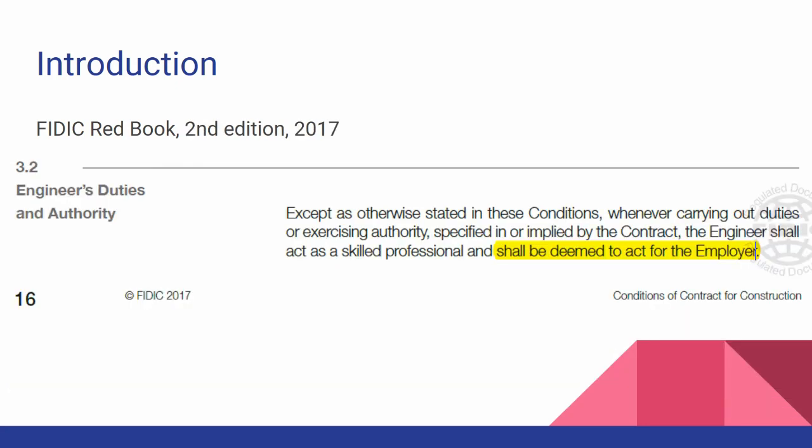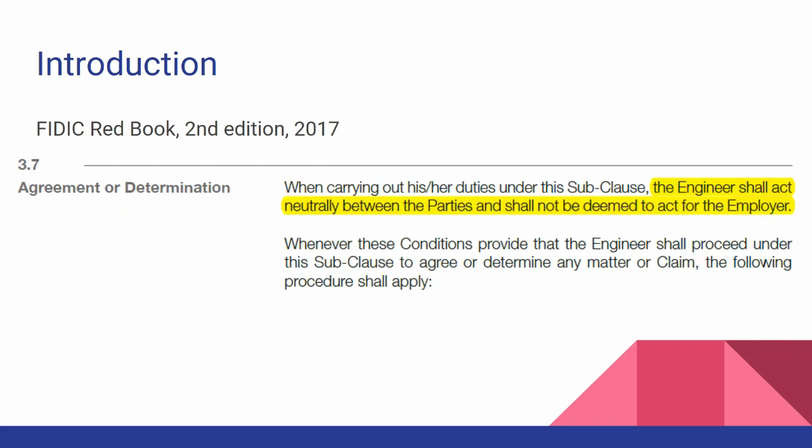In 2017, this problem was partially resolved. Clause 3.2 states the engineer is still deemed to act on behalf of the employer, however there is an exception: the engineer is not acting on behalf of the employer when rendering a determination. A new word was introduced in the 2017 edition — the engineer will be 'neutral.' Not impartial, not just fair, but neutral when determining disputes.